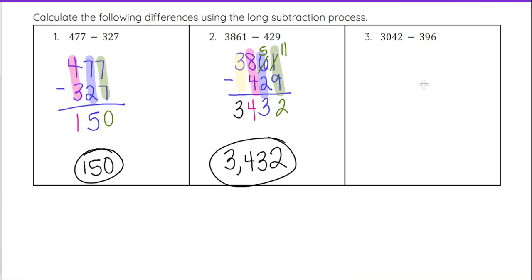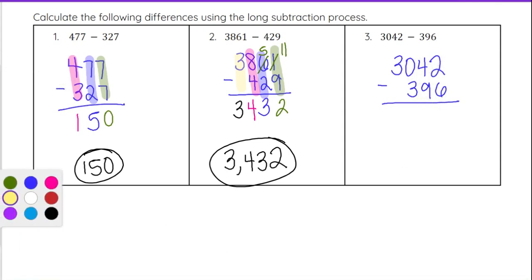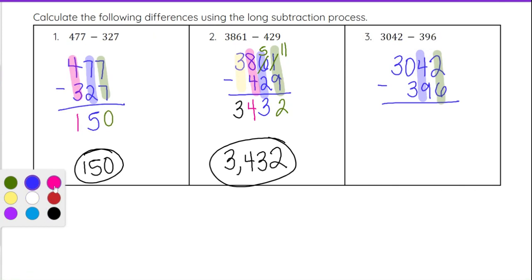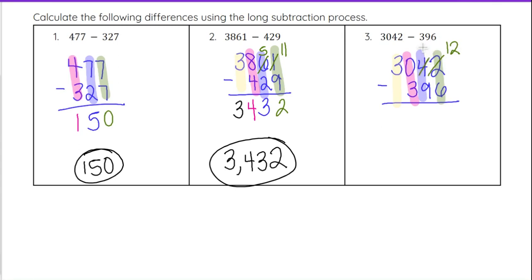On number three, we have 3042 minus 396. We have four digits and we are subtracting 396, which is three digits, so we line it up just like we did on the last one. We have our ones, tens, hundreds, and thousands columns. Starting with 2 minus 6 — that will give us a negative number, so we have to borrow. That 2 gets crossed out and becomes a 12, but to do that we borrowed from the 4, which drops down to a 3. So now we can do 12 minus 6, which is 6.